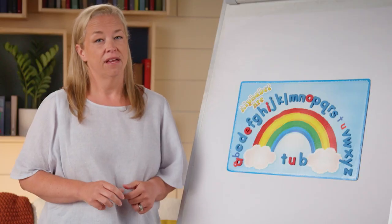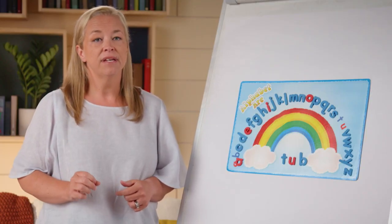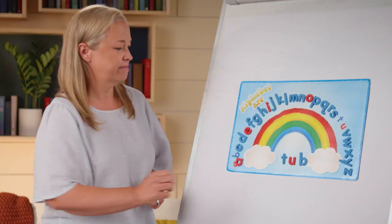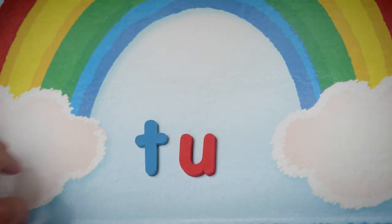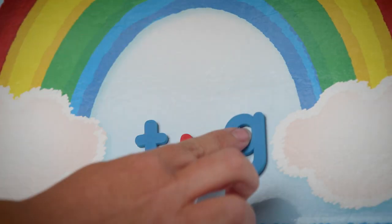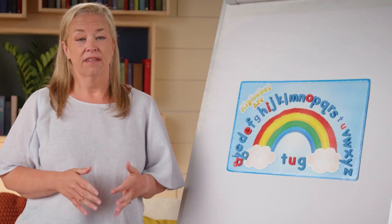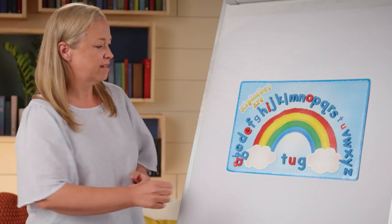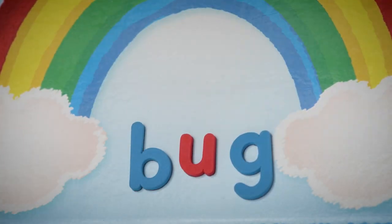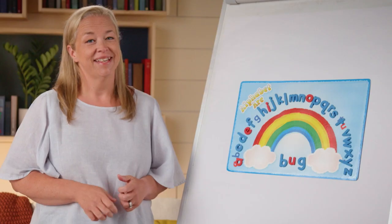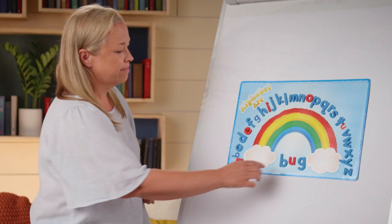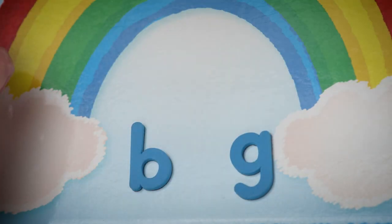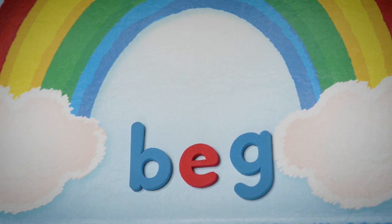Let's change 'cub' to 'tub' — change the initial sound, or the onset sound. Let's change 'tub' to 'tug' — that time I changed the last sound. Let's change 'tug' to the word 'bug' — I changed the initial sound.